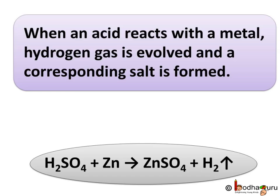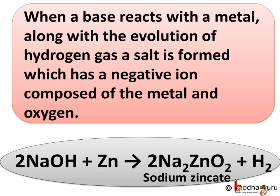Hello everyone. We already know when an acid reacts with a metal, hydrogen gas is evolved and a corresponding salt is formed. Also, when a base reacts with a metal, along with the evolution of hydrogen gas, a salt is formed which has a negative ion composed of the metal and oxygen. However, such reactions are not possible with all the metals.